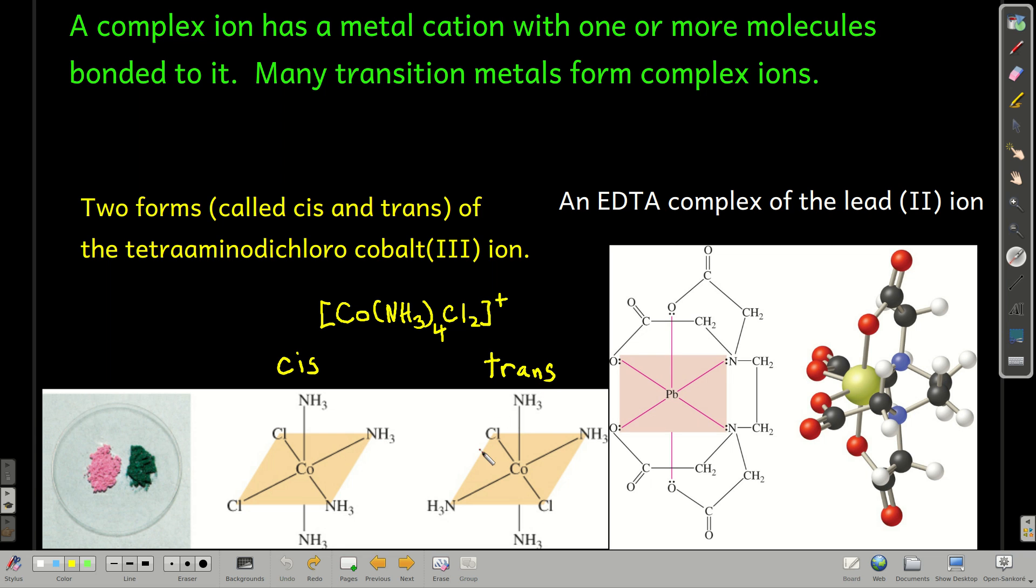And that's the only difference between these molecules, but they absorb light at different wavelengths. They have different colors. This is pure cis tetraaminodichlorocobalt(III) and this is pure trans. This one is pink, that's green.